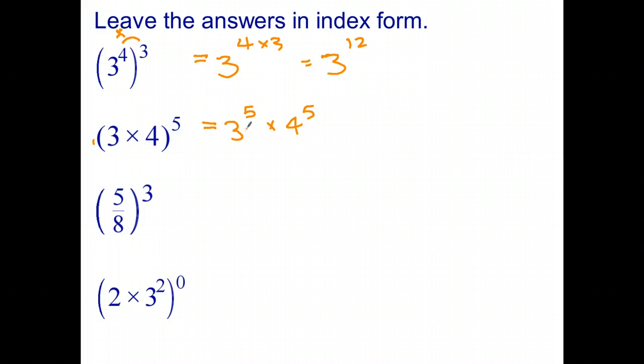And we just leave our answer in index form. Similarly, if we've got 5 over 8, all to the power of 3, that can be written without brackets as 5 to the power of 3 over 8 to the power of 3. So in other words, the power goes on both the 5 and the 8. And in this question, the 5 goes on both the 3 and the 4.